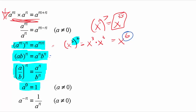The next two go hand in hand. If you ever have something in parentheses raised to a power, you have to take each thing in there to that power. So if I have 3x squared and I square that, I have to square the 3 and square the x squared. Squaring 3 gives 9, and for x squared raised to the second power, I multiply the exponents to get x to the fourth.